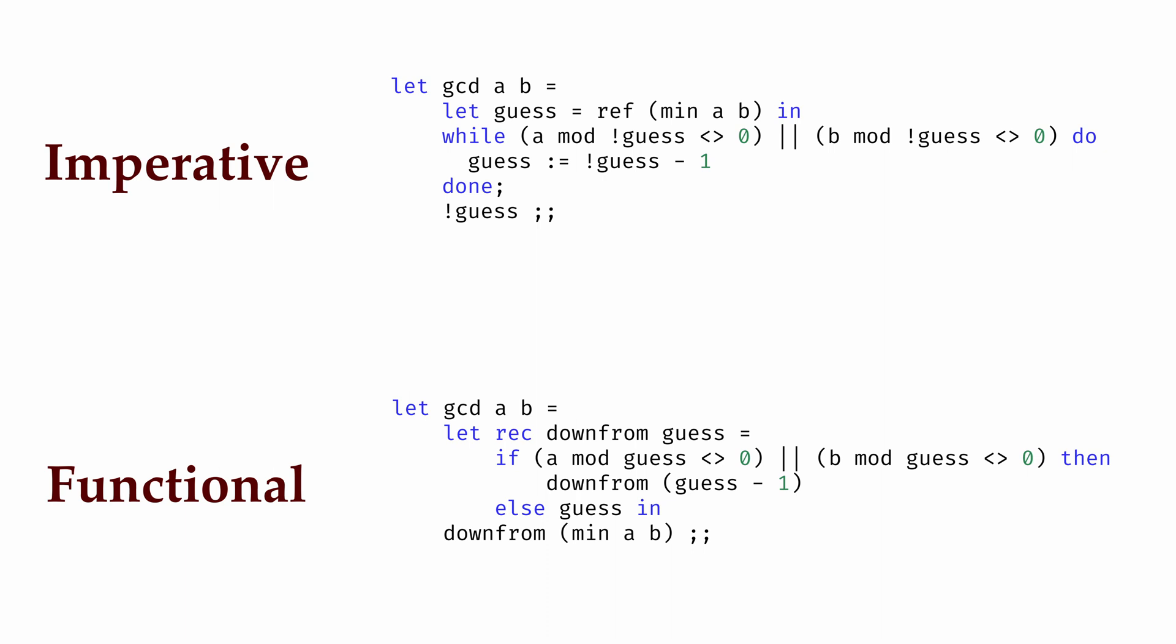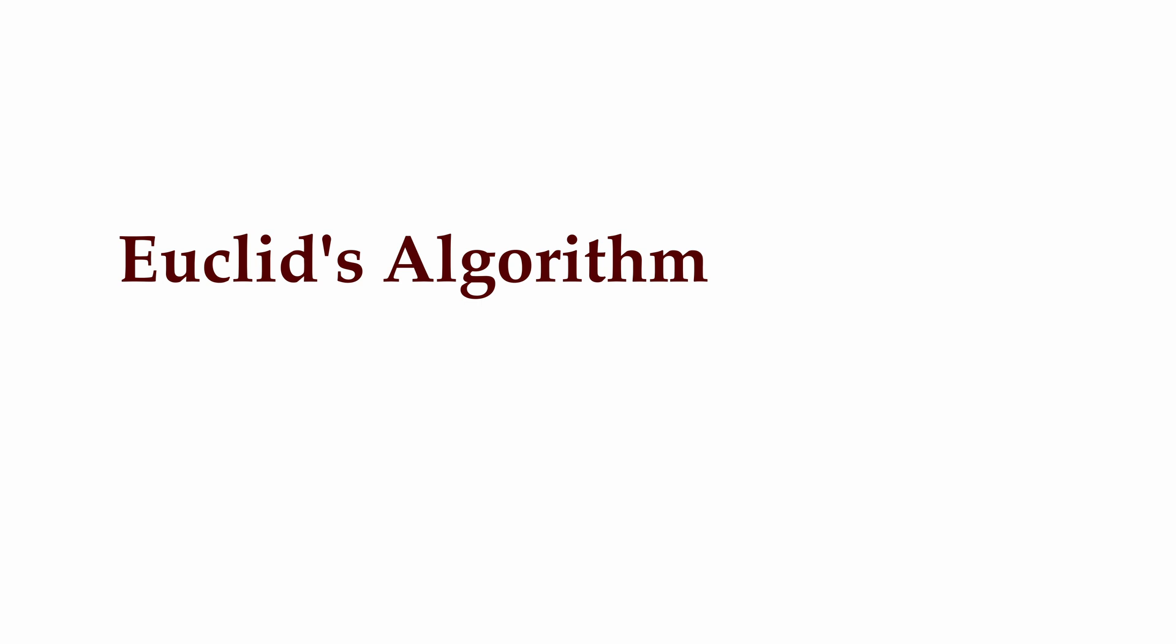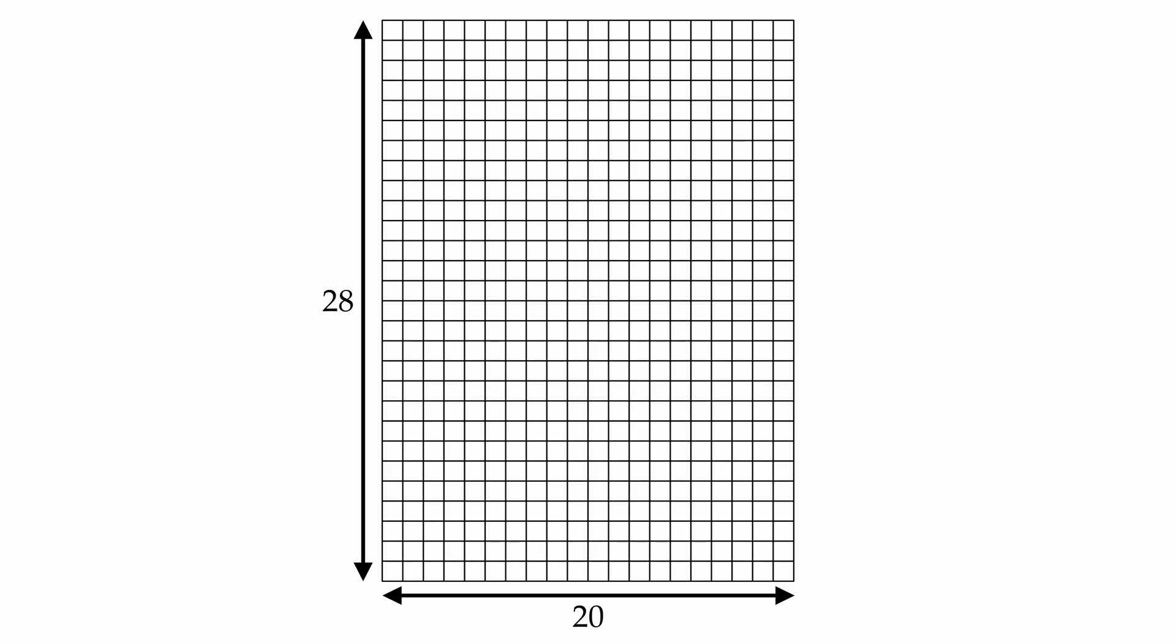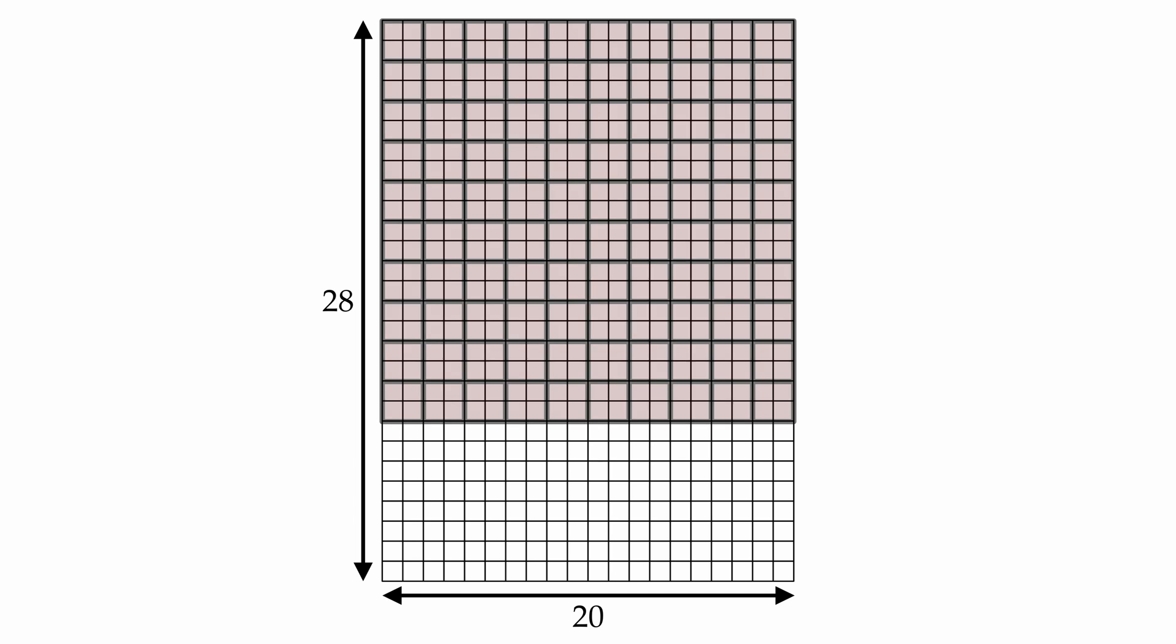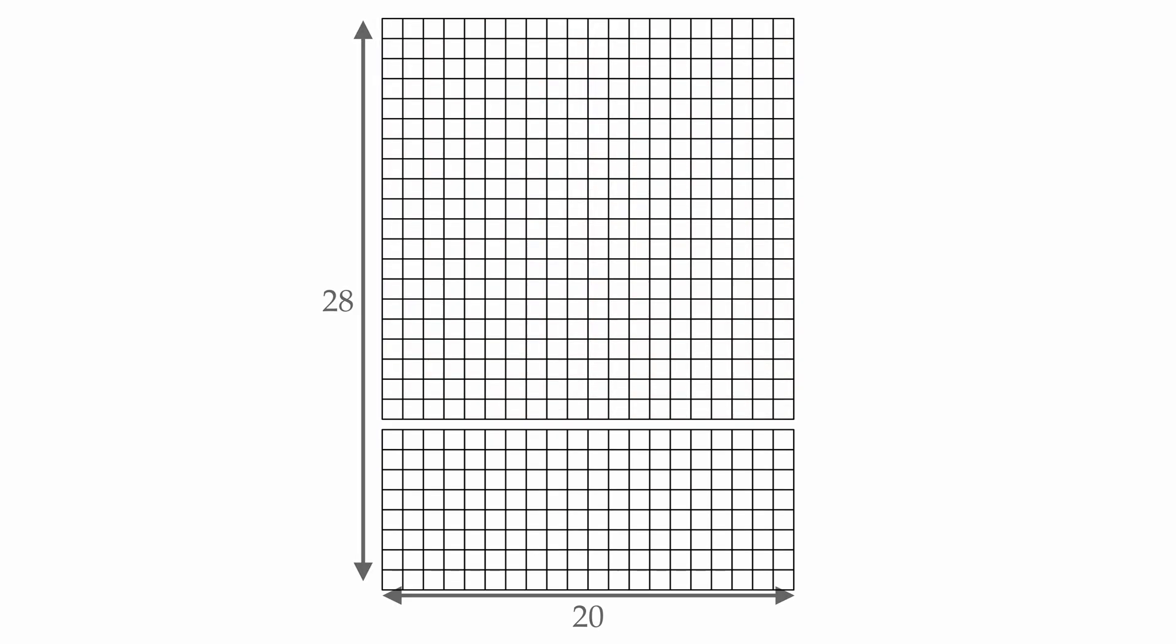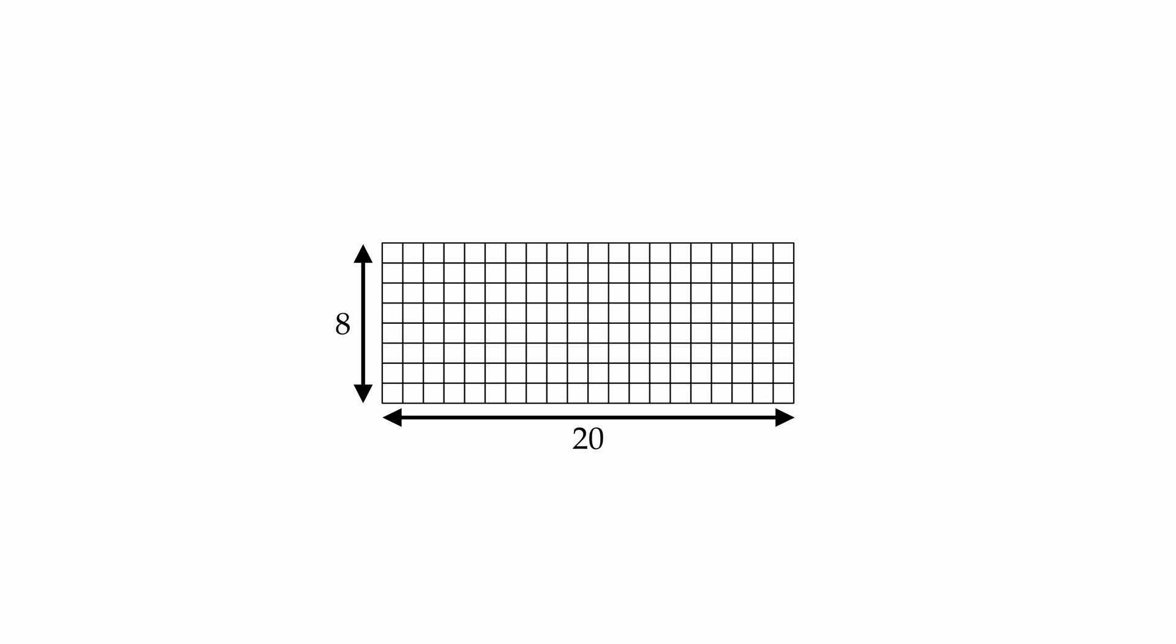But neither of these two solutions is a particularly good way to calculate the greatest common divisor between two numbers. If we wanted to improve our solution, we could look to an approach known as Euclid's algorithm. Euclid's algorithm is based on an insight. Let's go back to our 20 by 28 floor. One thing you might notice is that any tile that could tile this whole floor could also tile a 20 by 20 square floor, since we know the tile size evenly divides the number 20. And if we can use the tile to tile the whole floor and the 20 by 20 square floor, then it must also be able to tile this remaining 8 by 20 rectangular floor. So the greatest common divisor of 20 and 28 is the same as the greatest common divisor of 8 and 20.